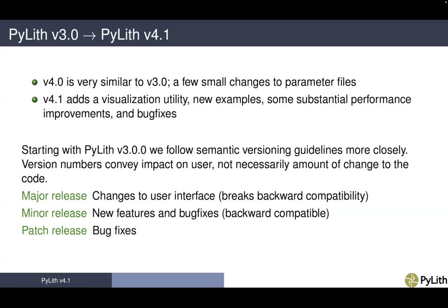When we do a major release, it means there are changes to the user interface that break backward compatibility, meaning you will need to update your parameter files to use a new version. If we do a minor release, there are new features and bug fixes but the parameter files are all backward compatible. In a patch release, there are no new features and we're just making bug fixes.